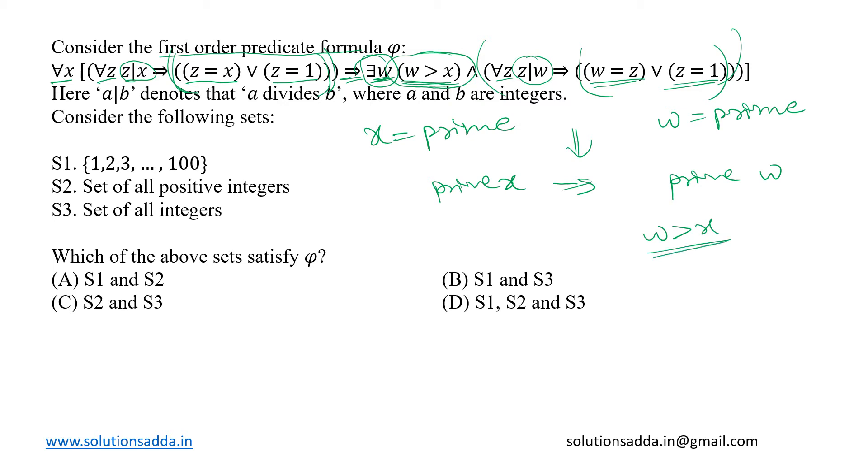Now given these three sets, we need to check if the given predicate logic is satisfied by them or not. Looking at set S1, it is a set of the first 100 natural numbers. Within this set we have in total 25 prime numbers, but if we pick, let's say, a prime number 97...